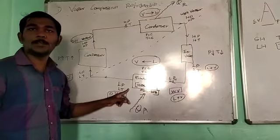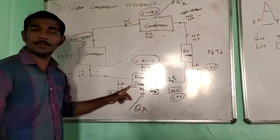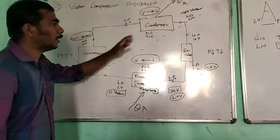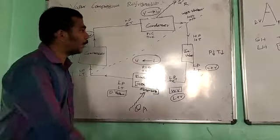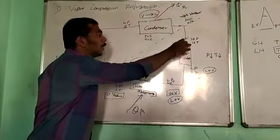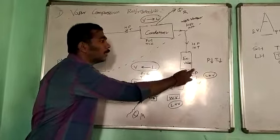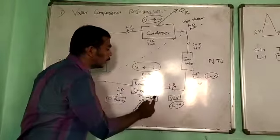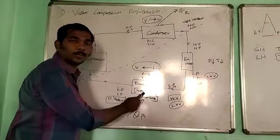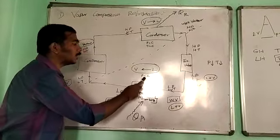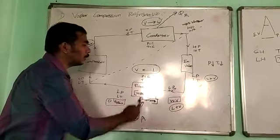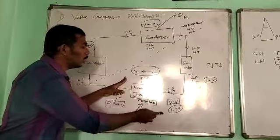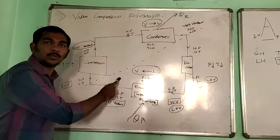Evaporator is a heat-absorbing device. For example, Expansion Valve — when the pressure and temperature decrease, the liquid can be evaporated. If it is evaporated, you can use the pressure and temperature. If you use liquid to absorb the temperature, then the vapors are evaporated.